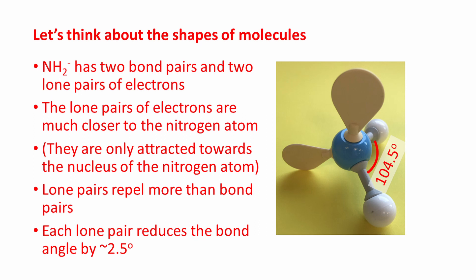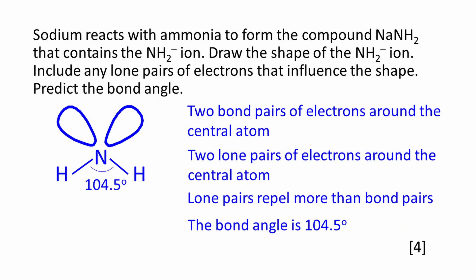The NH2- ion has two bond pairs and two lone pairs of electrons. The lone pairs of electrons are much closer to the nitrogen atom than the bonding pairs of electrons — they are only attracted towards the nucleus of the nitrogen atom. Lone pairs of electrons repel more than bond pairs. Each lone pair reduces the bond angle by about 2.5 degrees. The shape is drawn on the left here; the lobes above the nitrogen atom represent the lone pairs of electrons. To address the question: two bond pairs of electrons around the central atom, two lone pairs around the central atom, and lone pairs repel more than bond pairs.